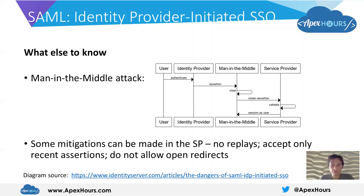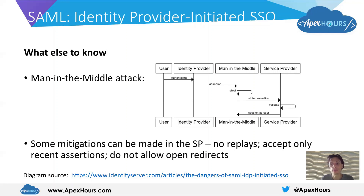There are a few best practices to minimize the risk around these kinds of attacks. It's not perfect mitigation but it's worth having all of these in place: ensuring that there are no replays within the service provider so an assertion can only be used once; making sure that the time window the service provider accepts is minimized so the assertion needs to be used at the same time the user was trying to log in; and not allowing open redirects, ensuring that the URLs accepted as relay state parameters are a whitelist of acceptable URLs. There's a recommended article on the risks around identity provider initiated single sign-on — that's where this diagram comes from.